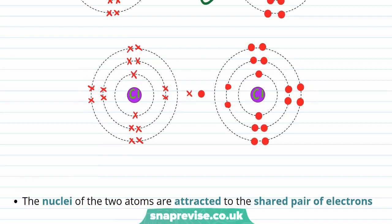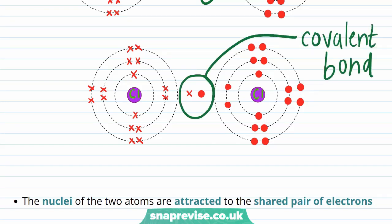Sharing has enabled both chlorine atoms to experience a full outer shell of electrons. And it's this shared pair of electrons that is what is called a covalent bond.